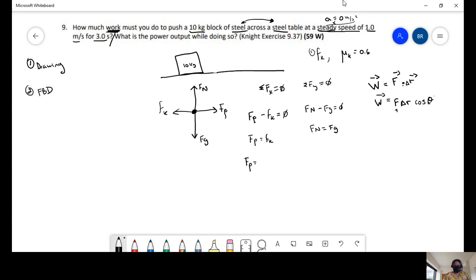So force push equals normal force times mu, coefficient of friction. And force normal equals mass times gravity. So the force of push equals 0.6 times 10 kilograms times 9.81. So the force of push is 58.86 newtons.